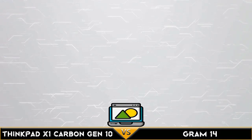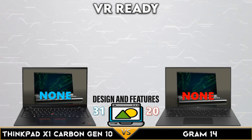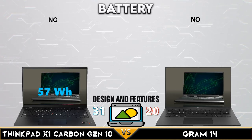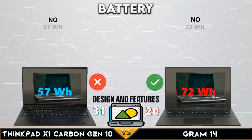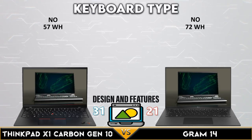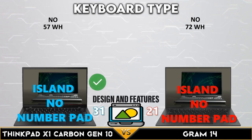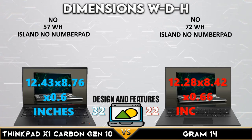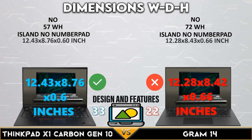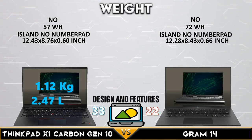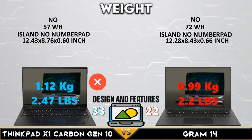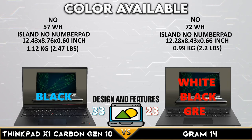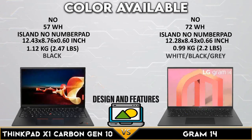Now the final comparison: design and features. Both devices do not support VR technology. The Gram 14 is better in battery storage capacity. Both have an island keyboard without a number pad. The Carbon X1 is slightly better in body dimension, while the Gram 14 is slightly lighter. The Gram 14 has 3 colors to choose from.